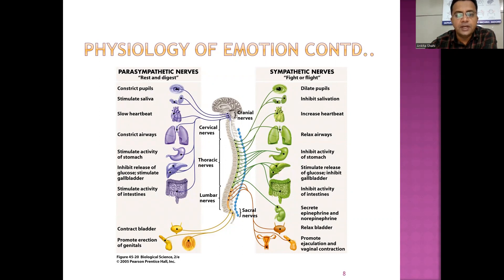The sympathetic nerves — fight or flight — when activated result in: dilated pupils, inhibited salivation, increased heartbeat, relaxed airways, inhibited activity of stomach, stimulated release of glucose, inhibited gallbladder, inhibited activity of intestines, secretion of epinephrine and norepinephrine, relaxed bladder, and promotion of ejaculation and vaginal contraction.